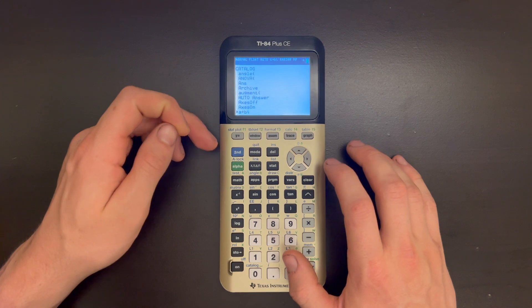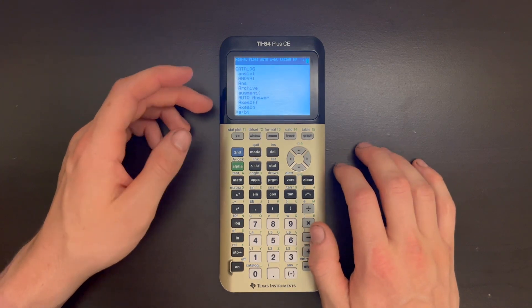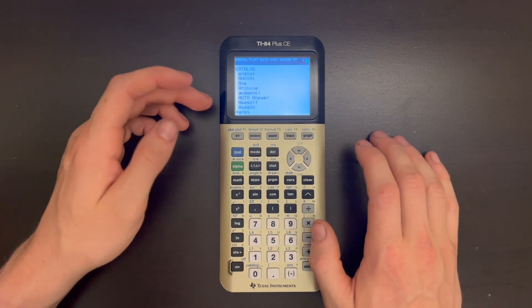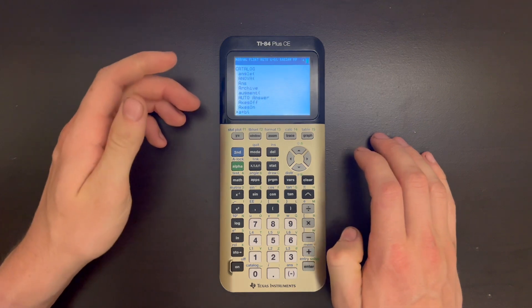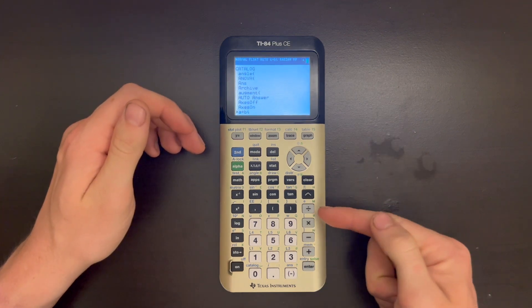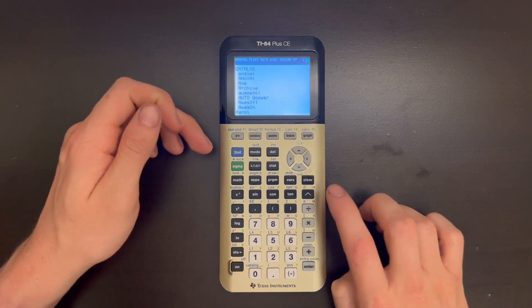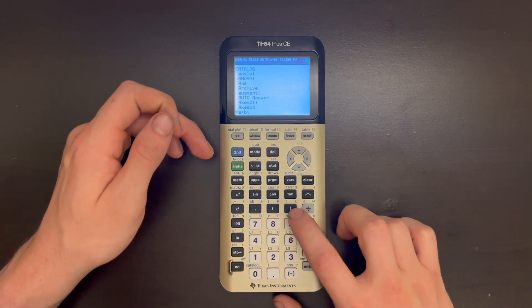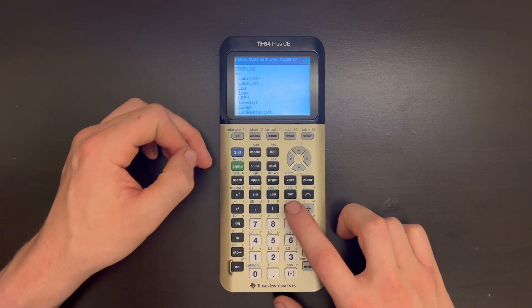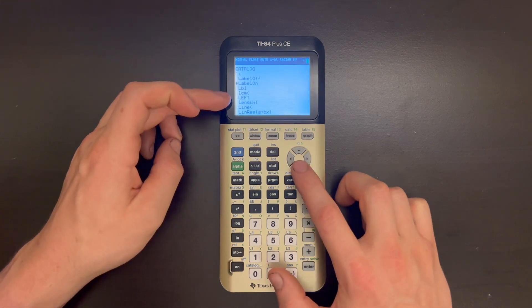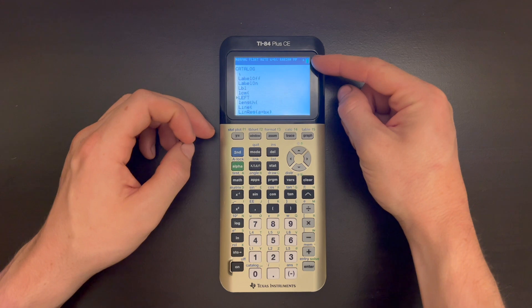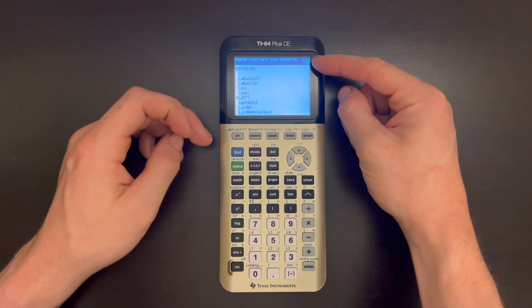Or what's quite a bit faster is just jumping to the place in the list based on the first letter of the function that you want. So if you know that your function starts with an L, you can press the key corresponding to whatever letter you want. So I'll press this close parentheses key for L, and that'll jump me to L in the list. And the alpha key will stay selected while you're in this list by default.